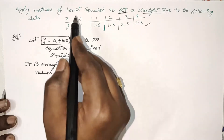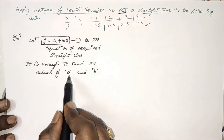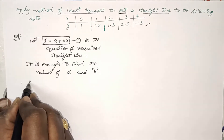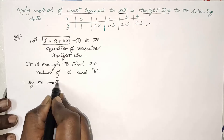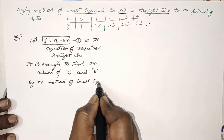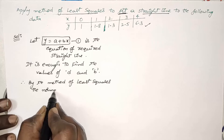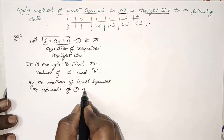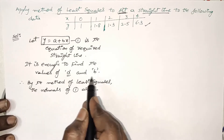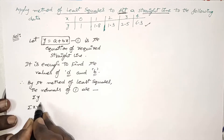What is the method of least squares? The method of least squares means we can find out both unknowns by writing the normals of this straight line. By the method of least squares, the normals of straight line 1 are — we need two normals because we have two unknowns. The first normal involves σy and the second normal involves σxy.